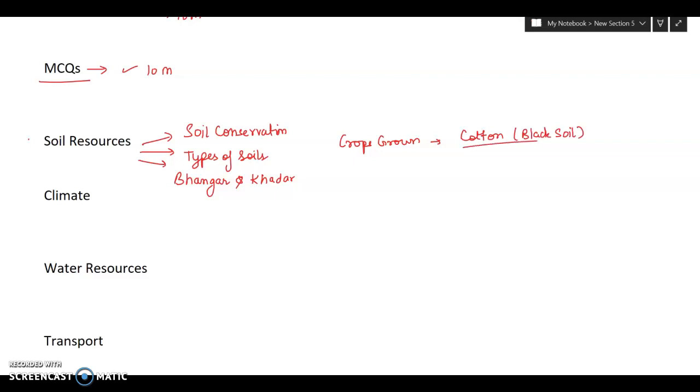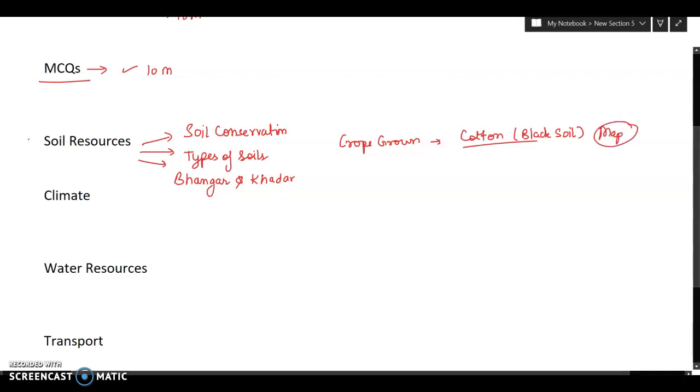The crops grown, for example, for cotton cultivation, black soil is the most suitable. The areas where black soil is there, red soil is there, they may ask you in the map also to shade the particular area.